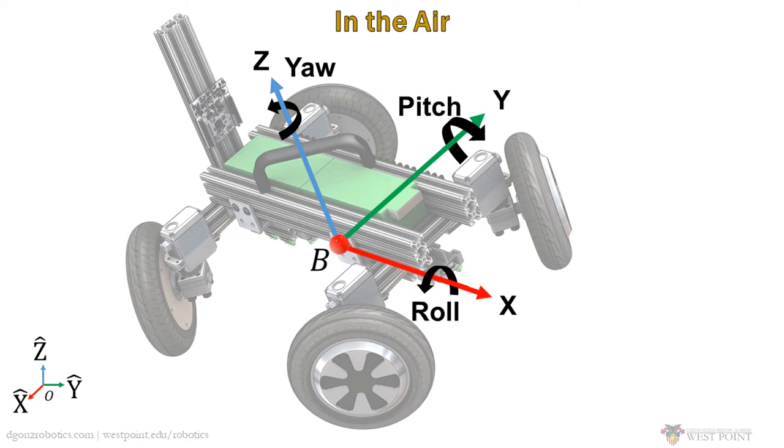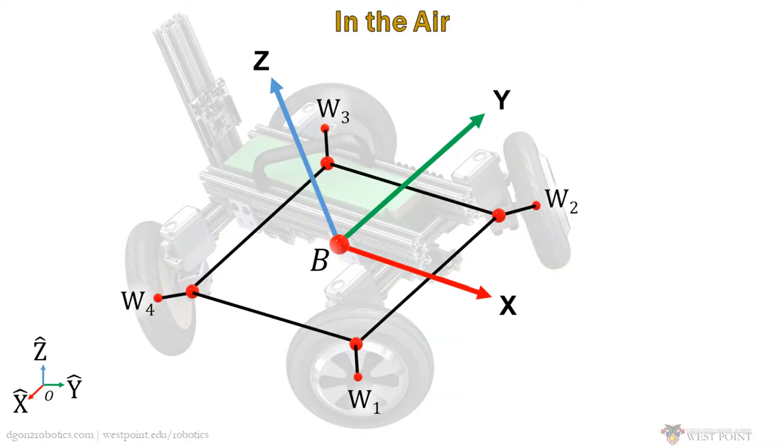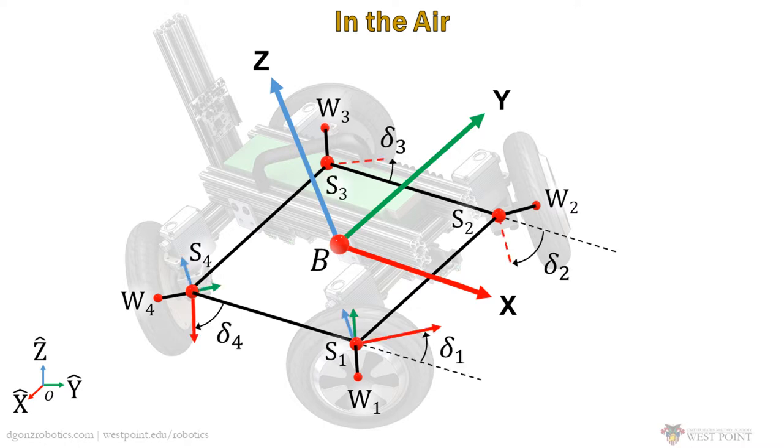While in the air, we consider small angles in roll, pitch, and yaw about the body-centric x, y, and z axes respectively. The wheels are numbered 1 to 4, going counterclockwise starting from the front right wheel. The steering angles between the body frame B and each steering frame S1 through S4 are delta 1 through delta 4.